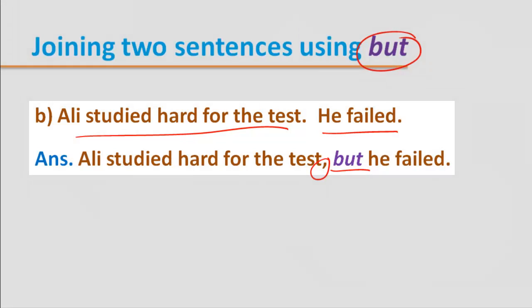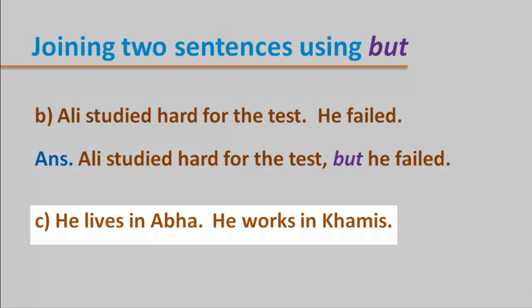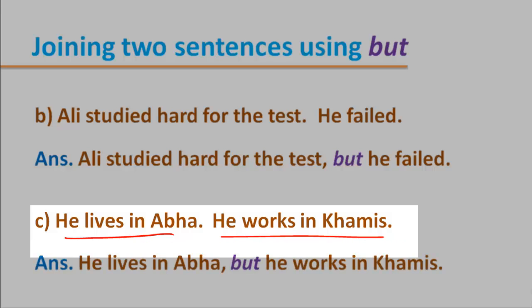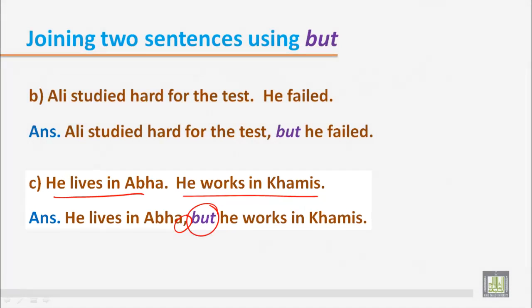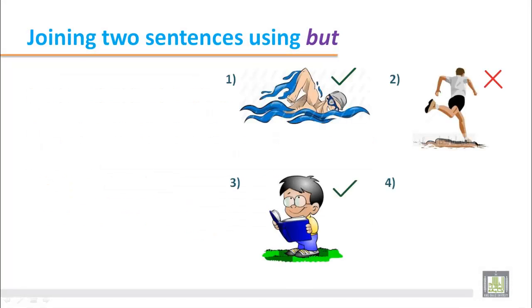Sentence C: He lives in Abha. He works in Kamis. Both sentences are positive and simple, but the ideas are contrasting. So we join them this way: 'He lives in Abha, but he works in Kamis.' We use 'but' as a conjunction in the middle and put a comma before 'but'.